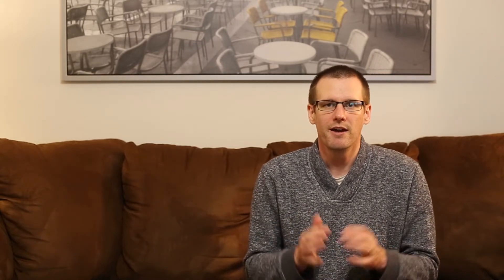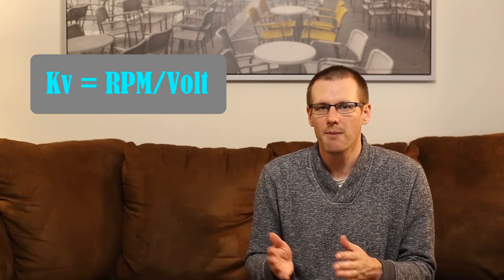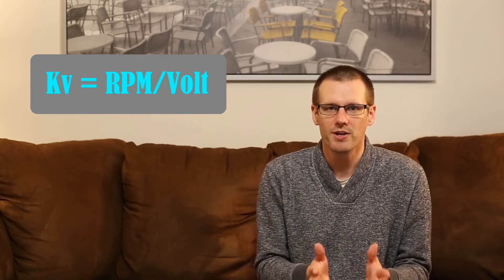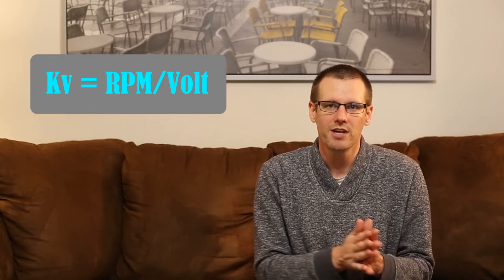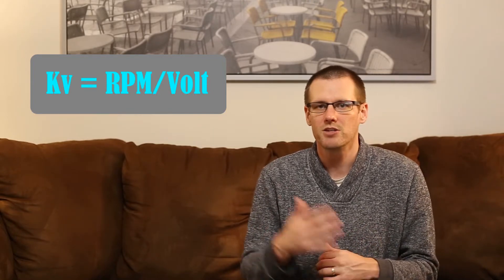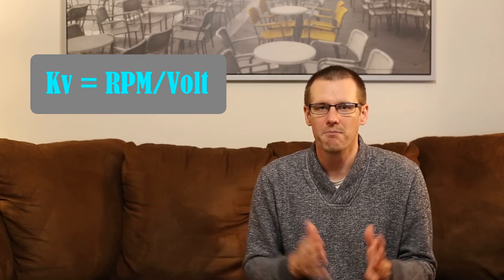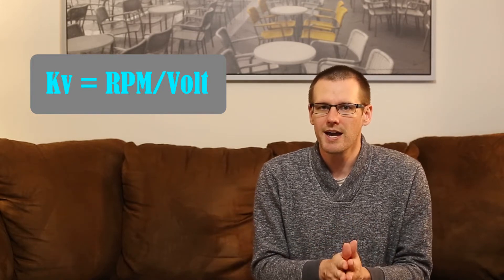Now the only thing that is going to be changing in our example is specifically the KV value. So that is the RPM per volt. As you take your KV value and you multiply it by a voltage, you get the total amount of RPM out of that motor. We're going to compare three motors within this example and those three motors are going to have varying KV values. Our first KV value, motor number one, is at 2830. The next one at 1570 and our last one at 790.